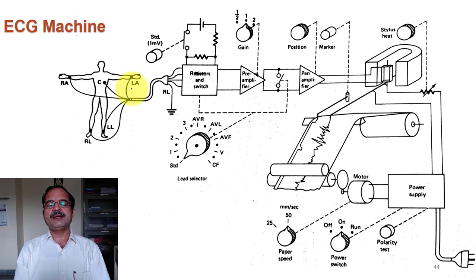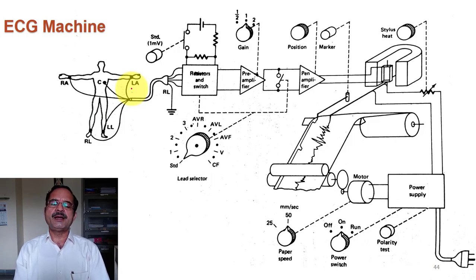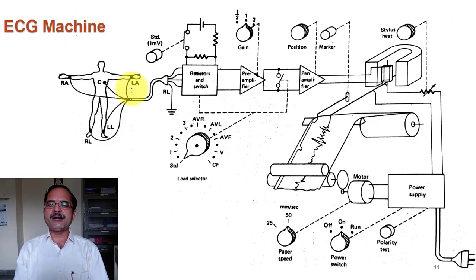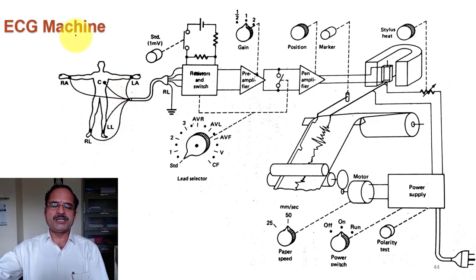That is about the electrical activity of the heart and ECG. We have discussed various types of electrodes, and artifacts in short. Related to artifacts, we will study it in more detail in a separate lecture. The last point about ECG we are going to discuss is the ECG machine.